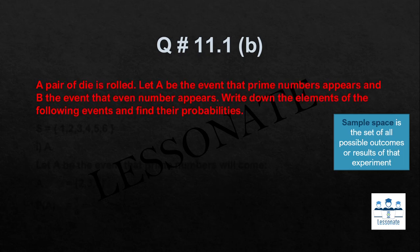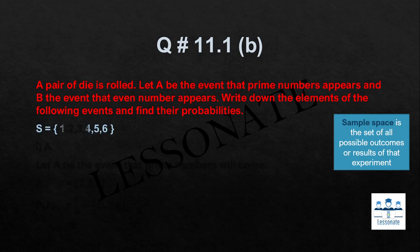Part B: a pair of dice is rolled. Let A be the event that prime numbers appear and B be the event that even numbers appear. Write down the elements of the following events and find their probability. First, we select the sample space, which is the set of all possible outcomes: {1, 2, 3, 4, 5, 6} — six faces, so any digit can come.